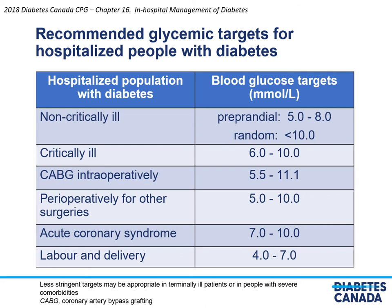In-hospital glycemic targets have been set by the Diabetes Canada Committee, in keeping with other organizations around the world. In non-critically ill patients, pre-prandial blood sugar targets should be between 5–8 mmol/L with a random blood sugar of less than 10 mmol/L — a grade D consensus recommendation. For the critically ill population, blood sugar targets are between 6–10 mmol/L, based on randomized controlled trial data. For bypass surgery, intraoperative glucose targets are 5.5–11.1 mmol/L, also based on RCT data. For other perioperative surgeries, targets are 5–10 mmol/L; for acute coronary syndrome, 7–10 mmol/L; and for women in labour and delivery, 4–10 mmol/L.